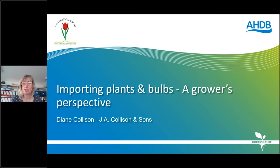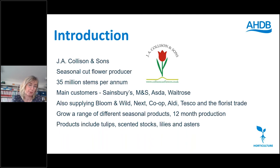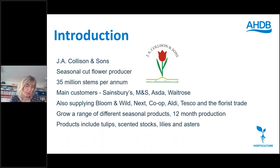I'm Diane Collison and I'm here today to talk about importing plants and bulbs from a grower's perspective. J.A. Collison and Sons is a cut flower producer on the Lincolnshire-Northrop border, producing about 35 million stems for cut flowers per year. Our main customers are supermarkets — Sainsbury's, M&S, Asda and Waitrose — but we also supply Bloom Wild, Next, Co-op, and Tesco's. We grow seasonal products with almost 12 months a year production; our main crops are tulips, scented stocks, lilies and asters.